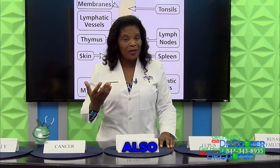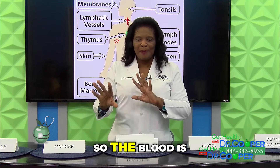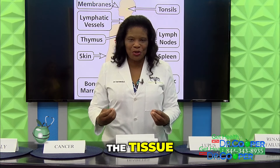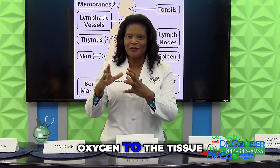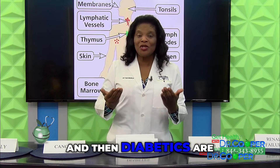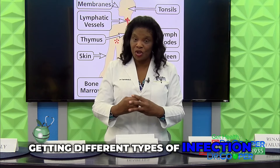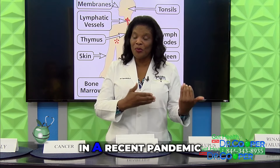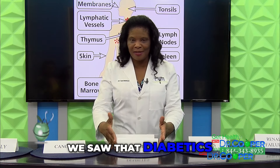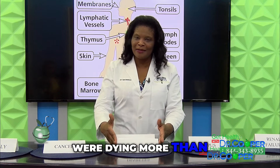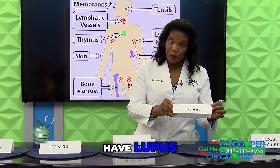Also, they probably have poor circulation, so the blood is not getting out of the tissue, meaning they're not getting enough oxygen to the tissue. Diabetics are at higher risk for getting different types of infection, and that is why in a recent pandemic we saw that diabetics were dying more than healthier patients. And then here we have lupus.